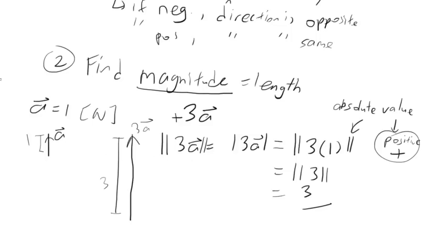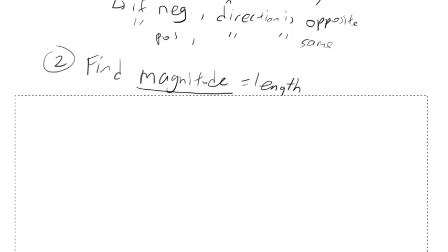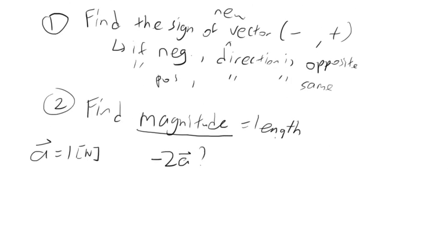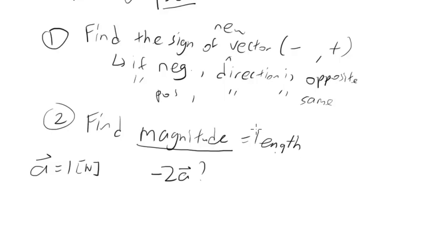Now, let's try another one. What if we were asked to find this vector? Given the same vector, vector A equals 1 north, what is negative 2A? Find this. So, again, first step, find the sign, and in this case, the sign is negative. So, we know that the vector is pointing somewhere along like that, in the down direction, since vector A is pointing in the up direction.